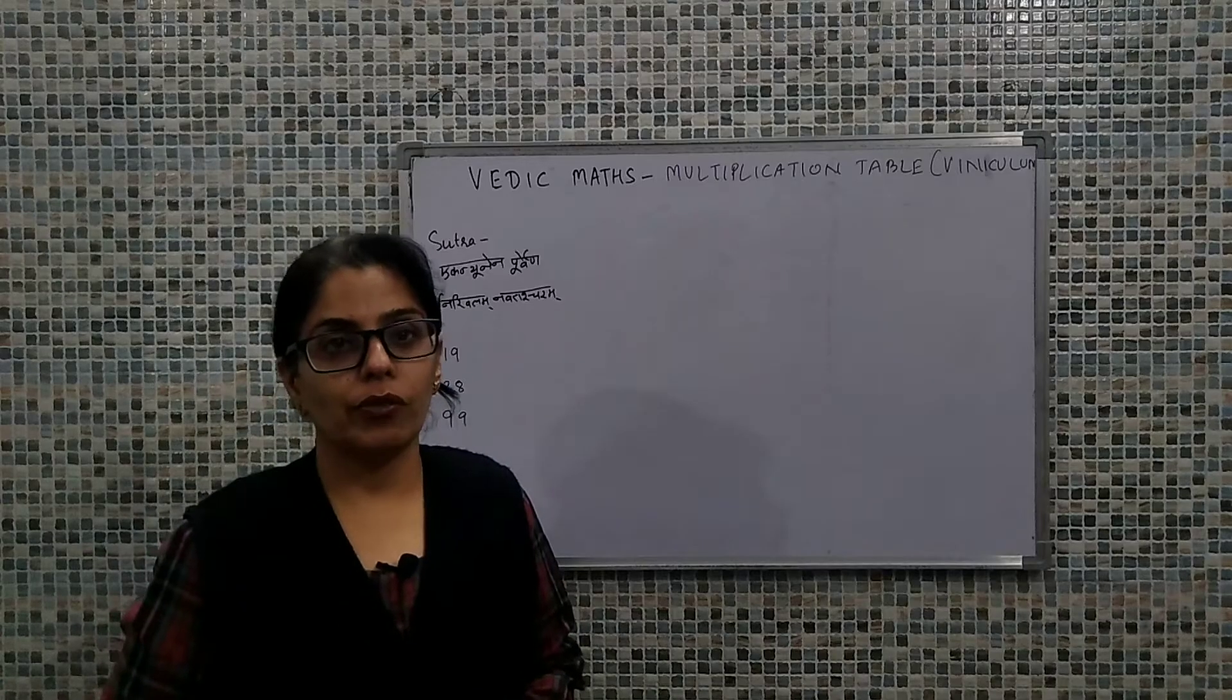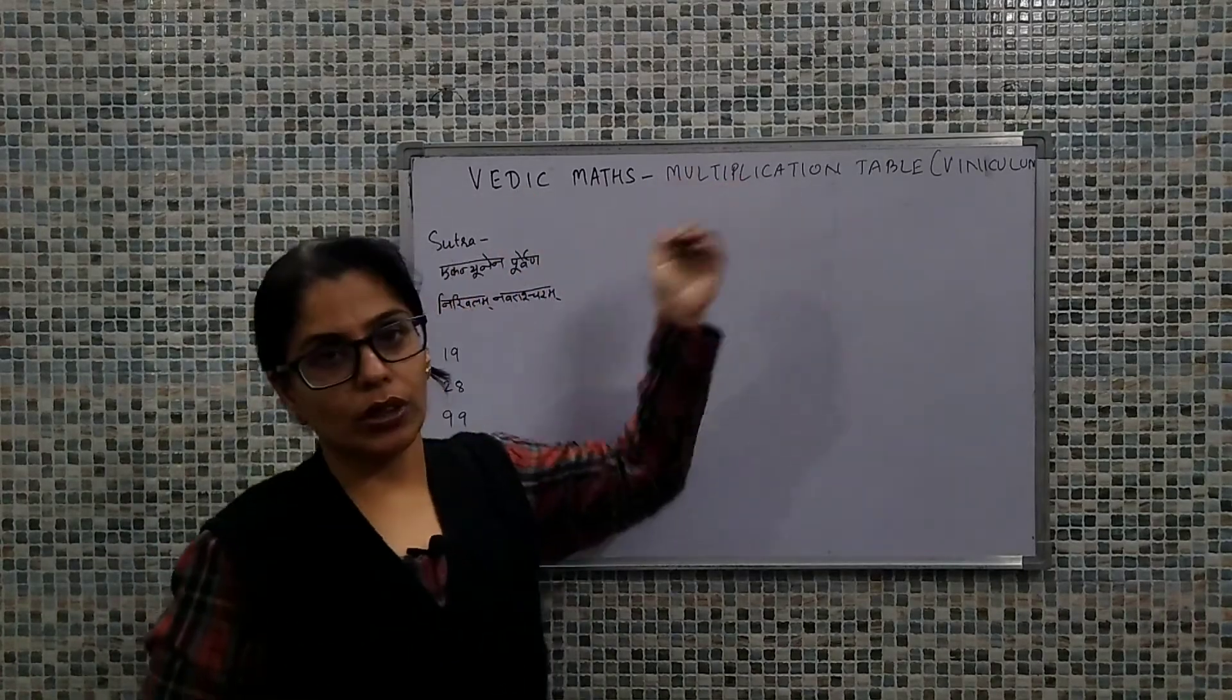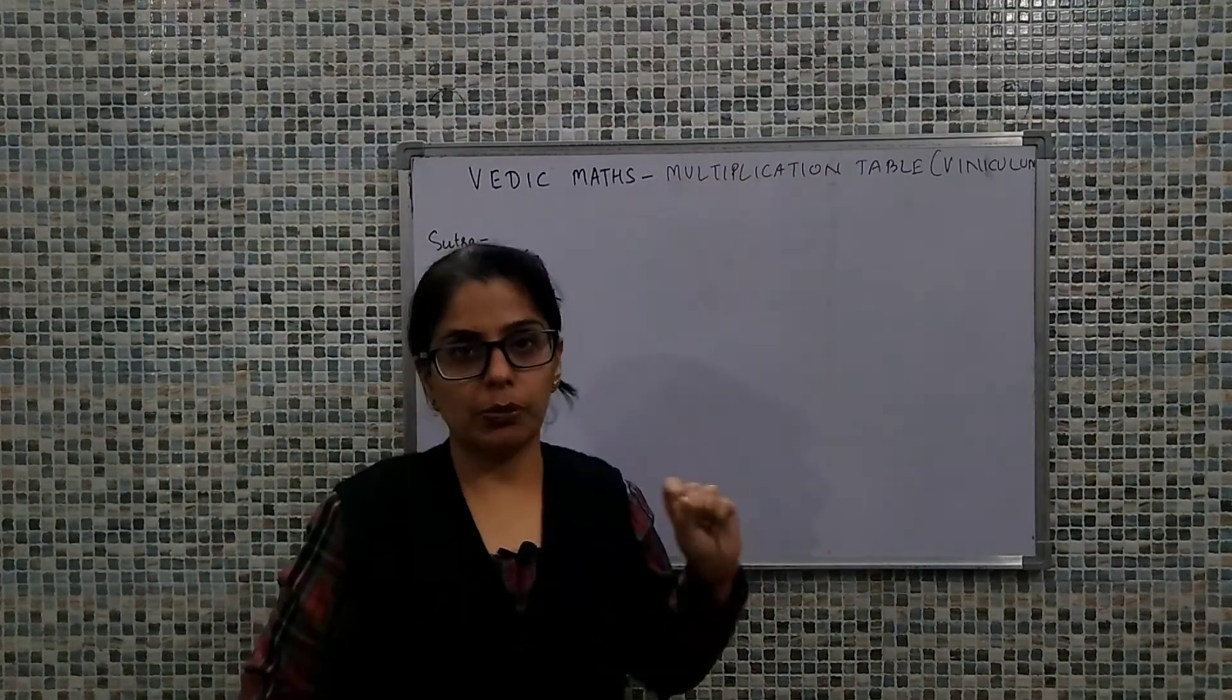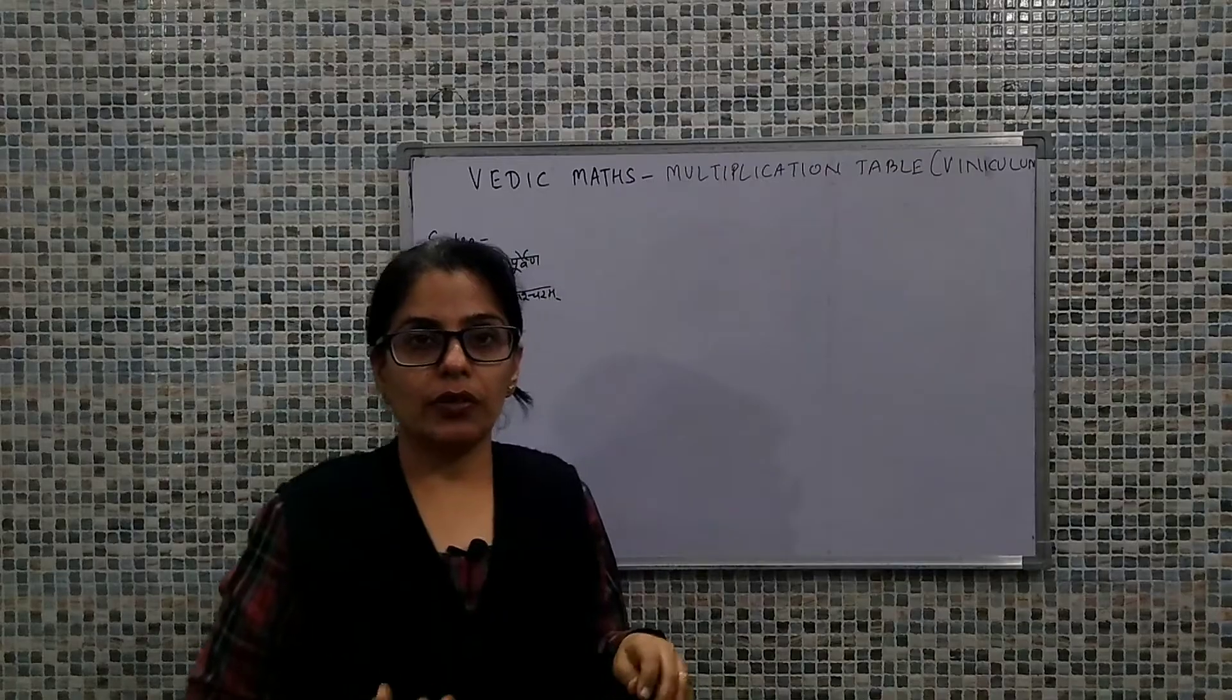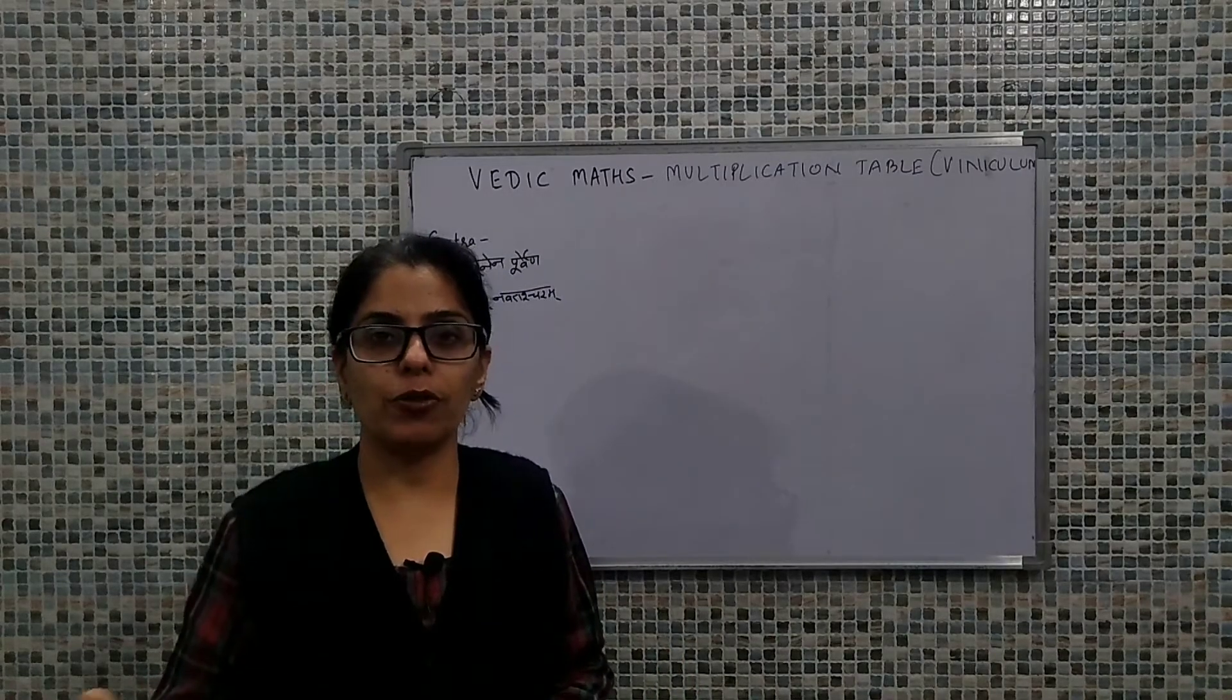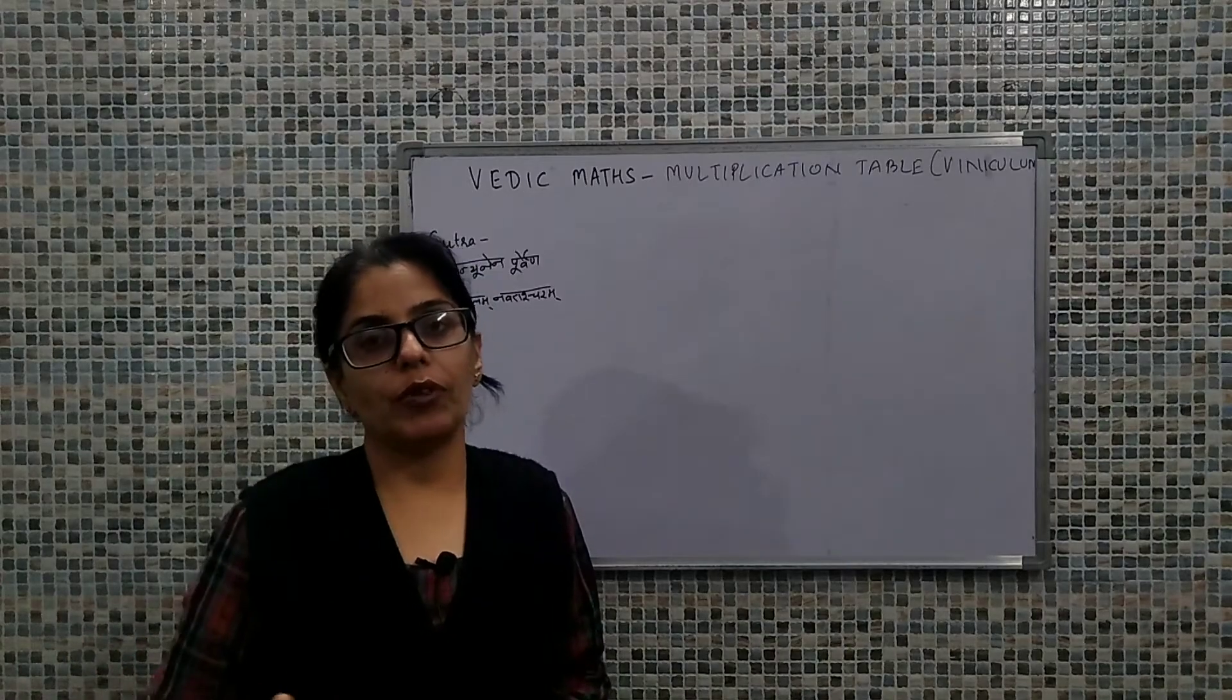Hello viewers, today we will be talking about the concept of viniculum and how it can be used for the formation of multiplication tables. When we talk about smaller multiplication tables like 2, 3, 4, 5, 6, 7, 8, 9, it's fine. But when we talk about larger values like 58, 99, 79, something like these big values.